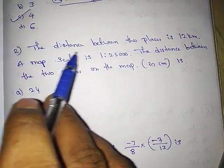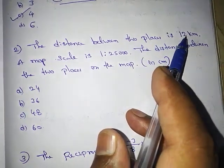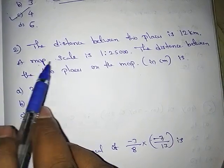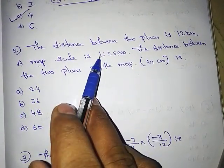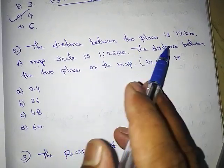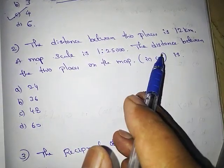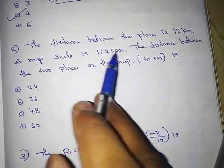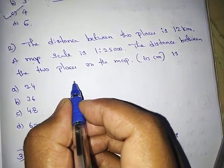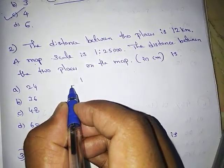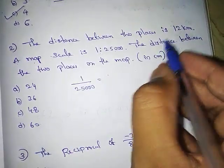Next problem: the distance between two places is 12 kilometers. On a map the scale is 1:25,000. The distance between the two places on the map in centimeters is — we have to find this in centimeters. The scale is 1:25,000.